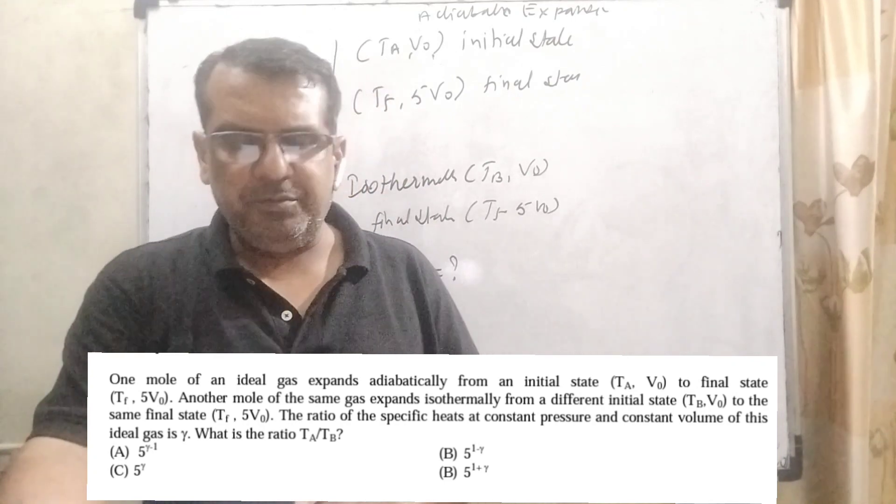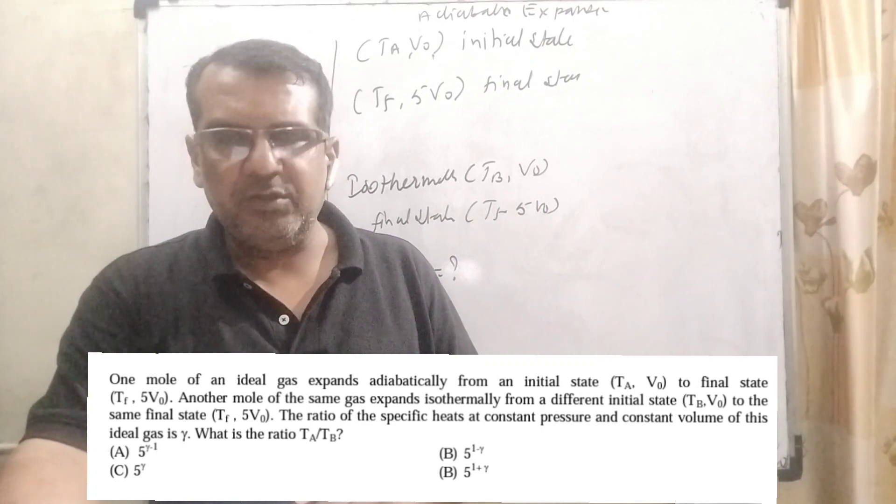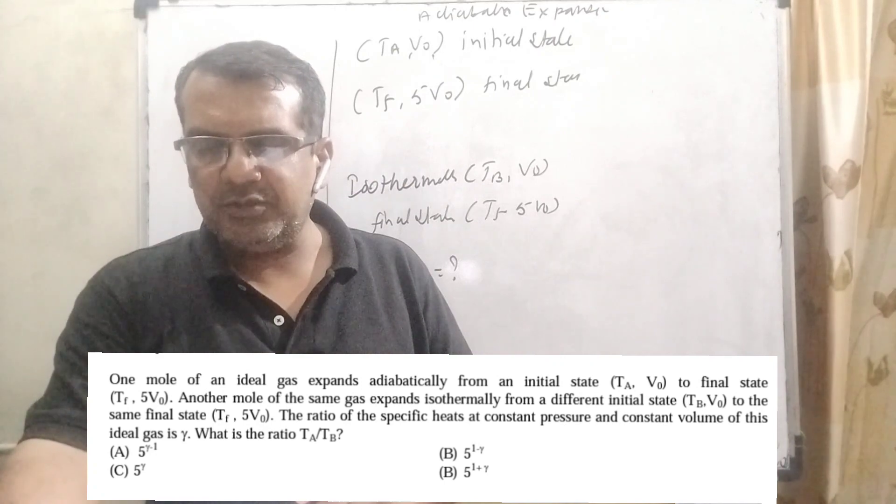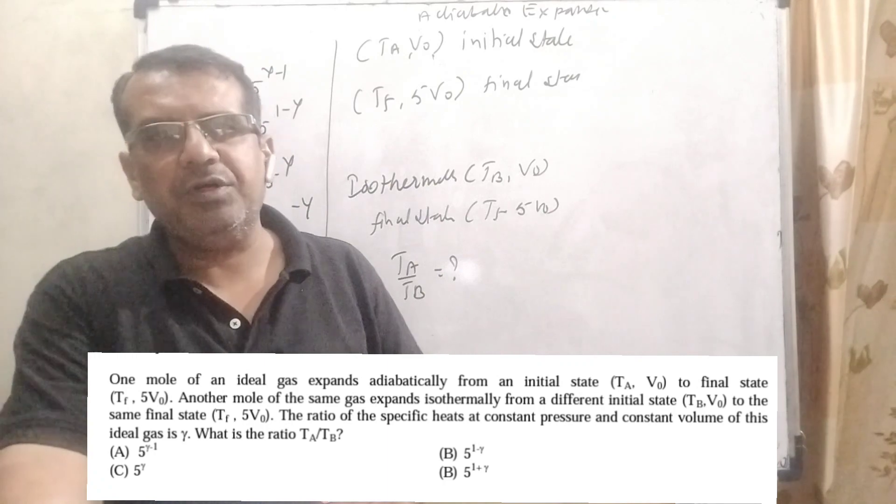Here we have given four options. Option A: 5 raised to the power (gamma minus 1). Option B: 5 raised to the power (1 minus gamma). Option C: 5 raised to the power gamma. And option D: 5 raised to the power minus gamma. And this question is from JEE Advanced 2023.